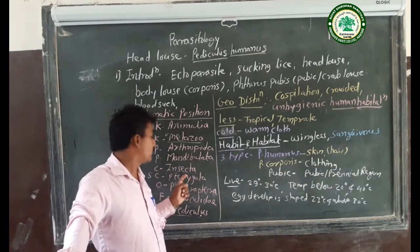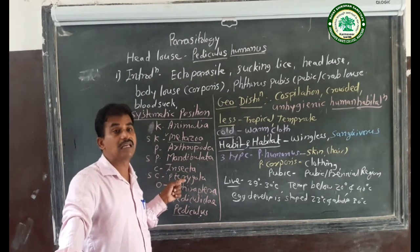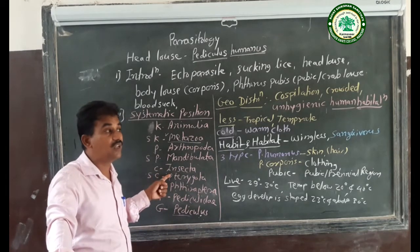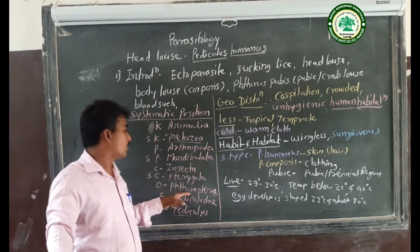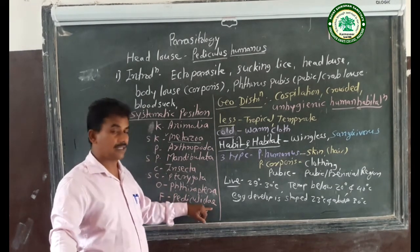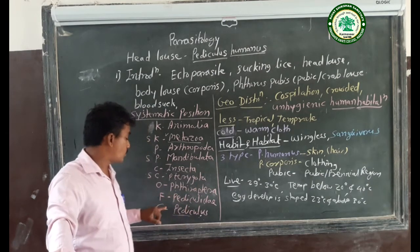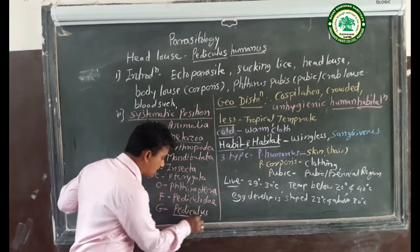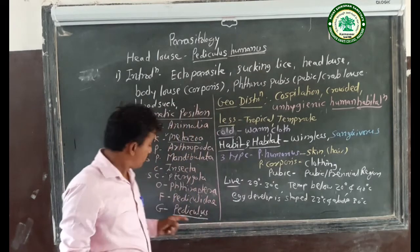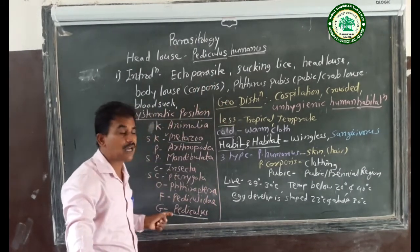Sub-class Apterygota — meaning wingless — these animals have no wings. Instead, their legs are fully modified and they move on the surface of the hair. Order Phthiraptera — meaning the body is compressed. Family Pediculidae — sexual dimorphism is present and these are easily identifiable by morphological characters. Genus is Pediculus, and the species is humanus, giving the full name Pediculus humanus capitis.